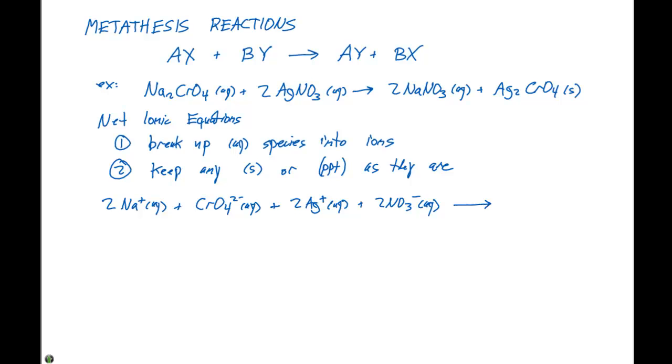So we can express the products as two Na plus in aqueous solution plus two NO3 minus, also in aqueous solution, plus the Ag2CrO4 solid or the precipitate.